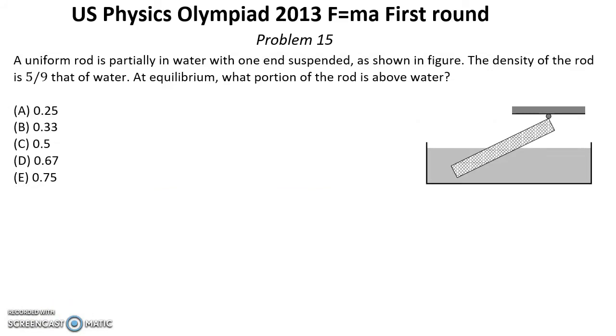Problem number 15. A uniform rod is partially in water with one end suspended as shown in the figure. The density of the rod is 5 over 9 that of water. At equilibrium what portion of the rod is above water? Solution.